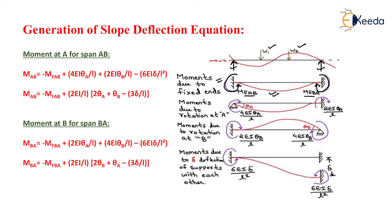In the next case, joint A is considered as a hinge support and joint B as a fixed support. By removing the fixity at joint A and treating it as a hinge, there will be a rotation of theta A, due to which a moment of 4EI·θA/L acts. This carry-over is transferred to the far end in the same direction at half magnitude, equal to 2EI·θA/L.